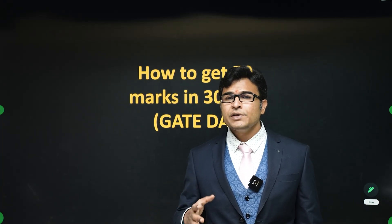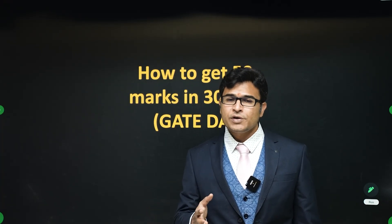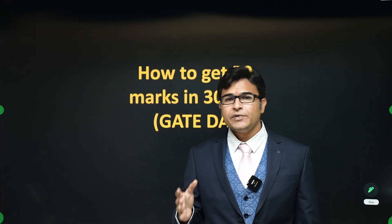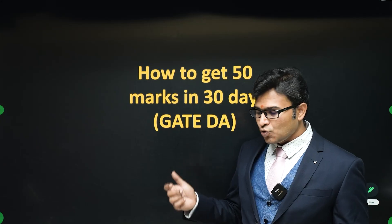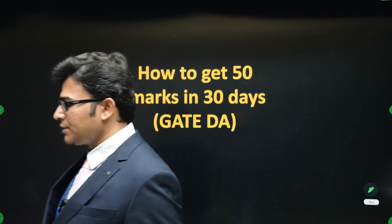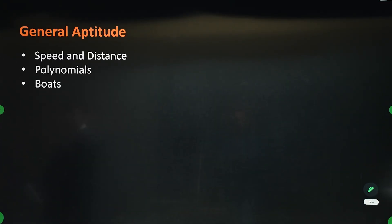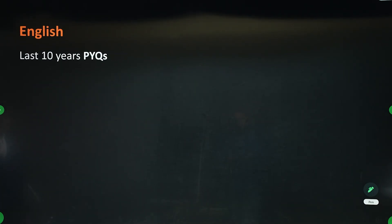So if you follow this, there are chances that you will get 50 marks in 30 days. I will show you these slides — just go through them. This is for General Aptitude, you can pause the video and go through it. And this is for English — for English, you have to just do the previous 10 years' question papers.